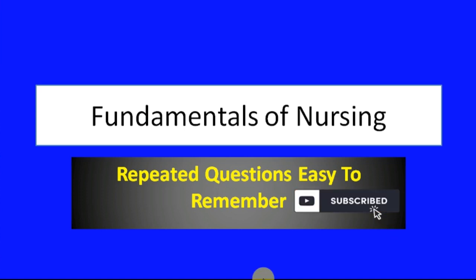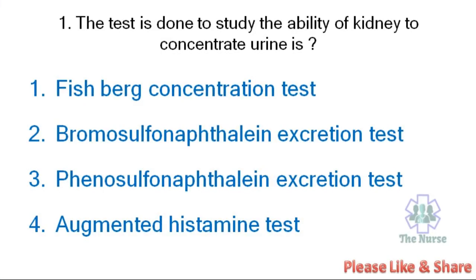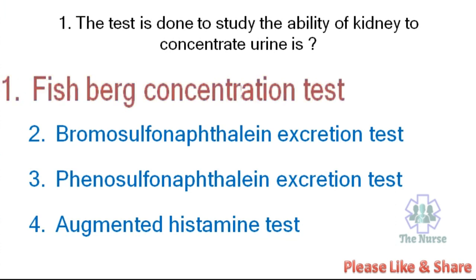First question. The test done to study the ability of the kidney to concentrate urine. Options: Fishburne concentration test, Bromosulfonaphthalene excretion test, Phenosulfonaphthalene excretion test, or Augmented histamine test. The correct answer is Fishburne concentration test — it is used to study the ability of the kidney to concentrate urine.